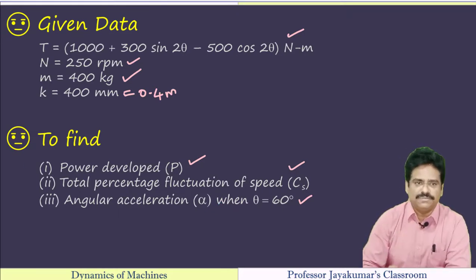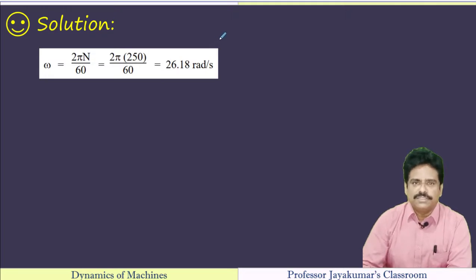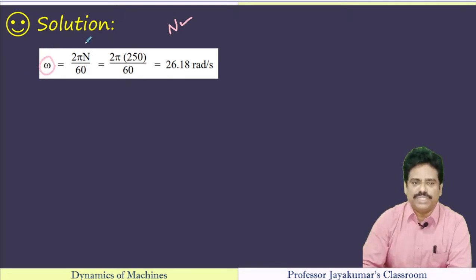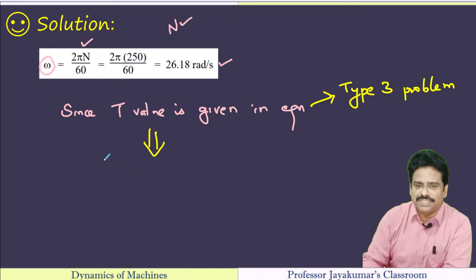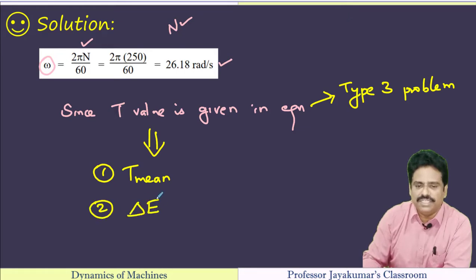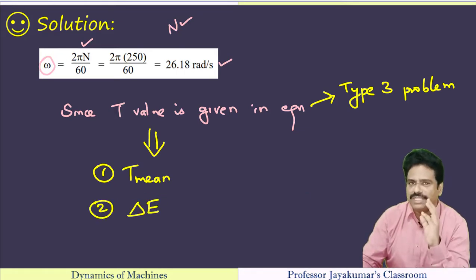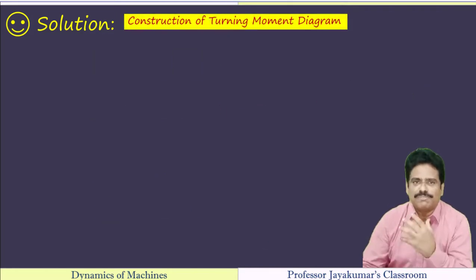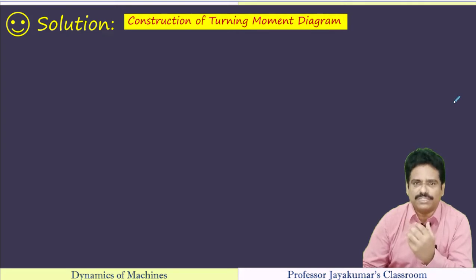As always, since n is given, we can find omega using omega equals 2πn divided by 60. When the turning moment diagram is given, we first find T_mean and then find delta E. For our better understanding, let us draw a conceptual sketch of the given turning moment diagram.